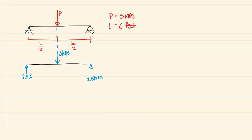I'm also going to label the important points along this free body diagram so we can use them as reference later on: A, B, and C. A represents the pin at the left, B represents the point load in the middle, and C represents the roller support at the very right-hand side of this beam.